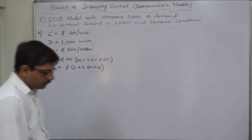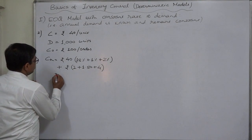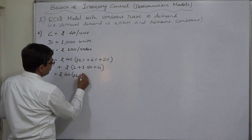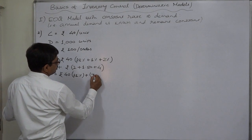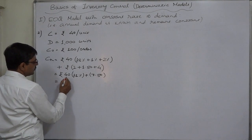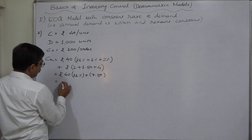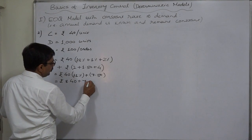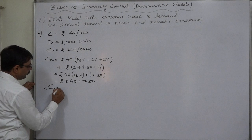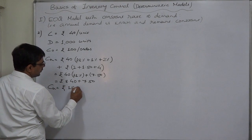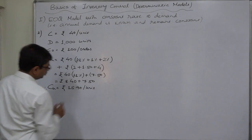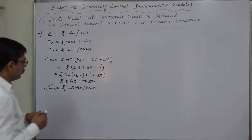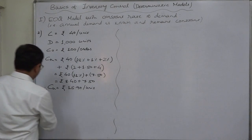Let us simplify: rupees 40 into 21% (18 + 1 + 2) gives rupees 8.40. Adding the fixed components: rupees 2 + rupees 1.50 + rupees 4 = rupees 7.50. So ultimately the cost of holding or carrying cost comes to rupees 15.90 per unit per annum. Now we have all three components needed for calculations. Let us first calculate EOQ.